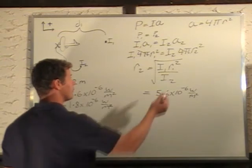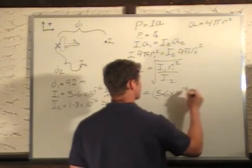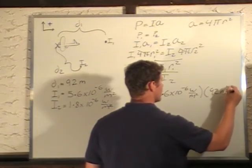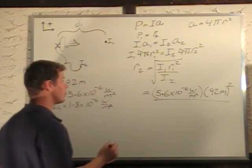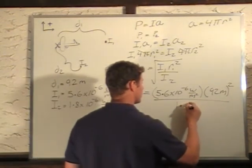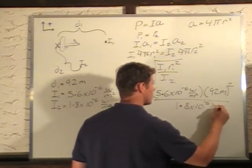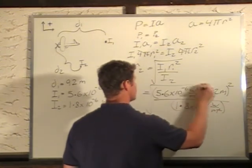We have the radius is 92 meters, so we're taking that times 92 meters and that's squared. I'll divide by the intensity of the second point, which is 1.8 times 10 minus 6 watts per square meter, and that's all under the square root sign.